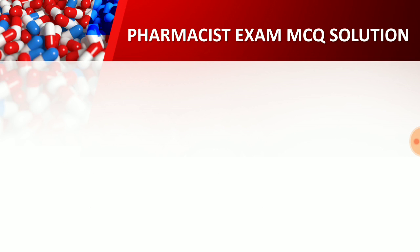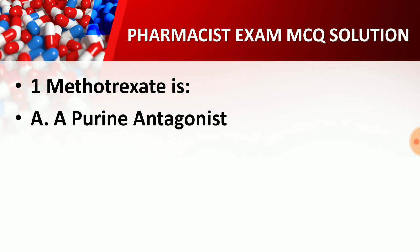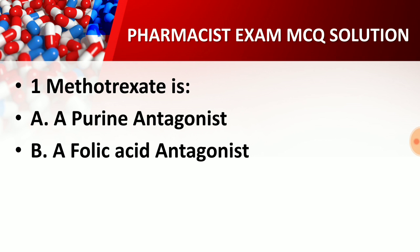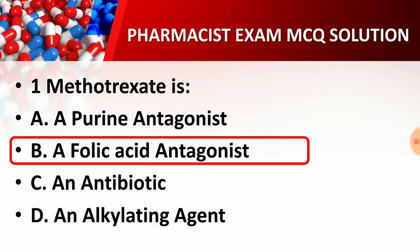Question number one: Methotrexate is — option A, purine antagonist; option B, folic acid antagonist; option C, an antibiotic; option D, an alkylating agent. The correct answer is option B, folic acid antagonist. Methotrexate's classification within anti-cancer drugs falls under the folic acid antagonist class. Such pharmacology classification-based questions are commonly asked in pharmacist exams. So, methotrexate is a folic acid antagonist.